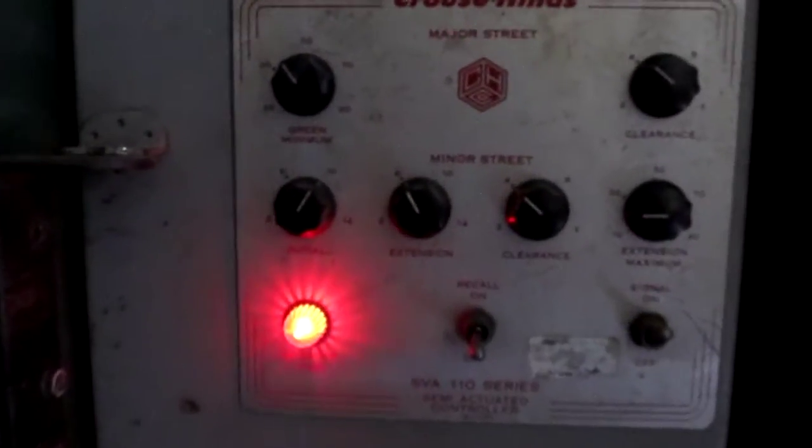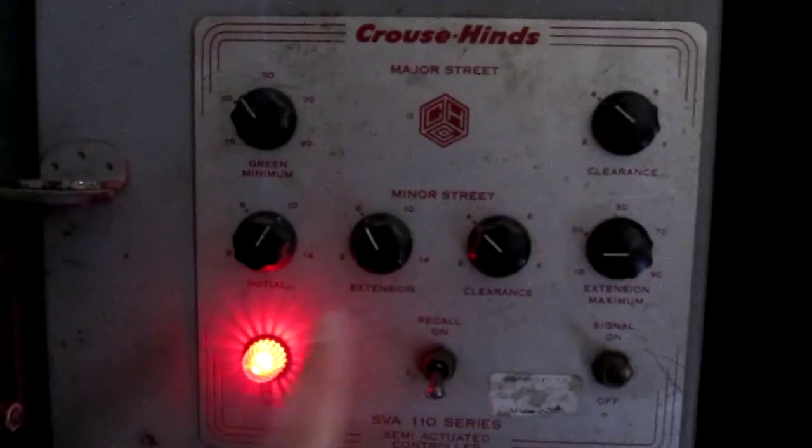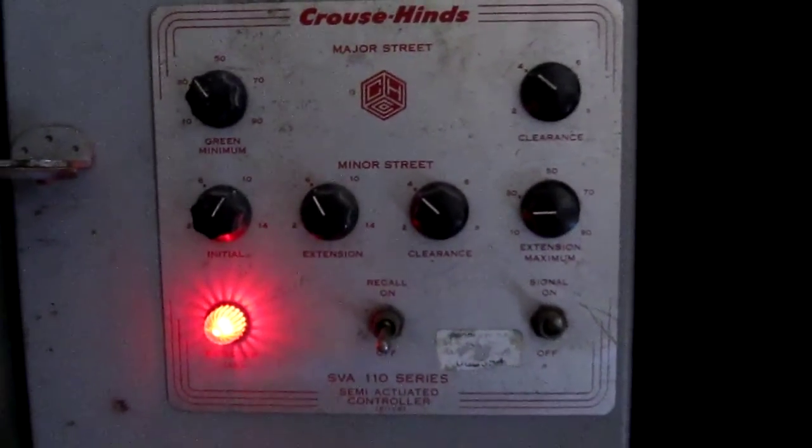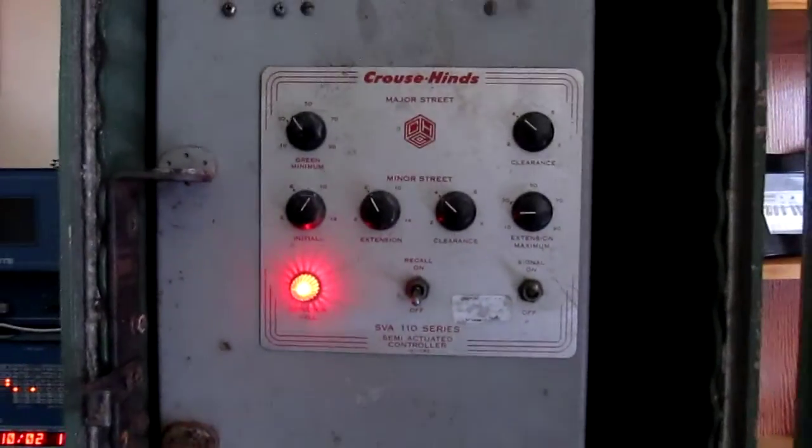You can see all these dials here. That's how you set the timing. Those are actually resistors, variable resistors. And by adjusting those, you change the amount of time that different intervals take.